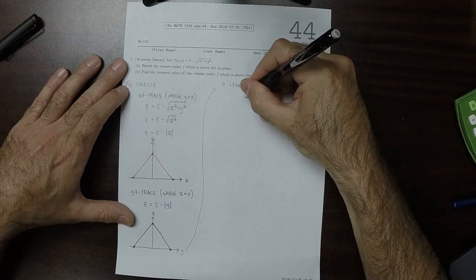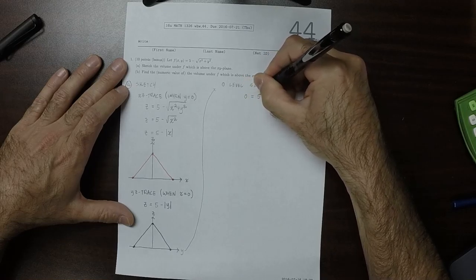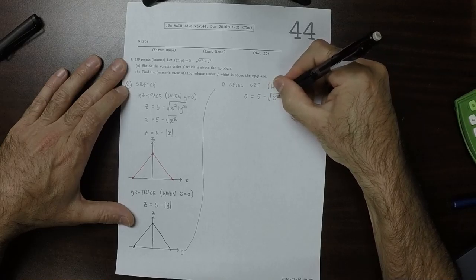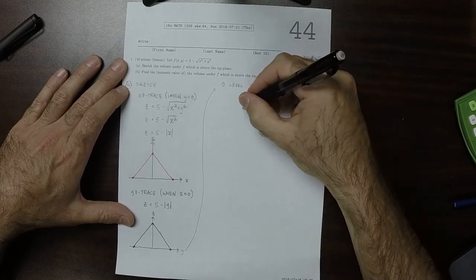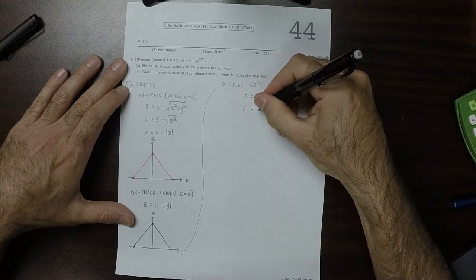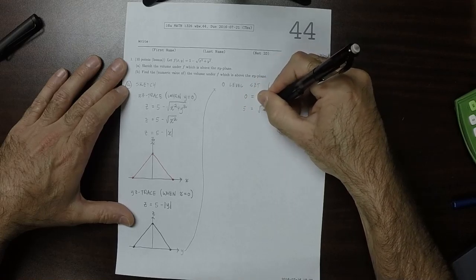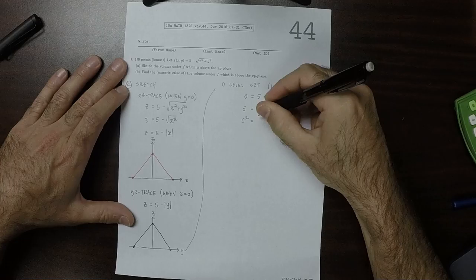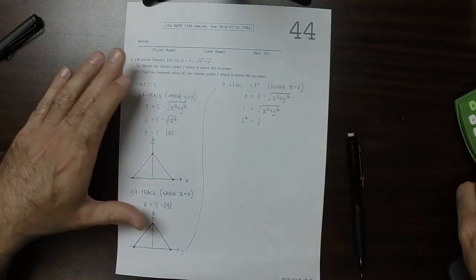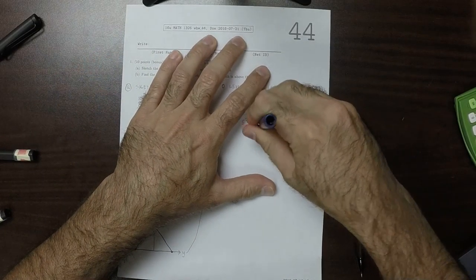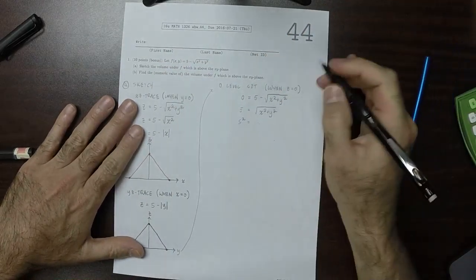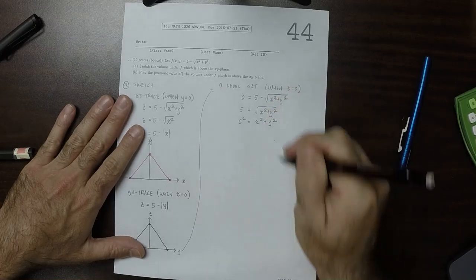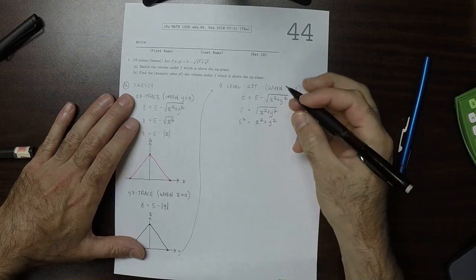we have 0 is 5 minus the square root of x squared plus y squared. So 5 is the square root of x squared plus y squared. So 5 squared is x squared plus y squared. And this is the circle of radius 5.